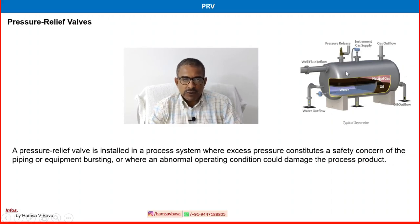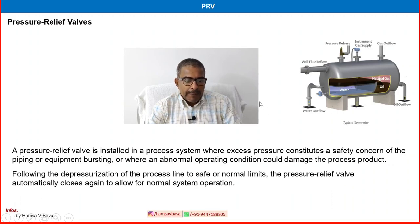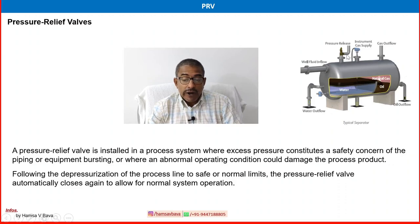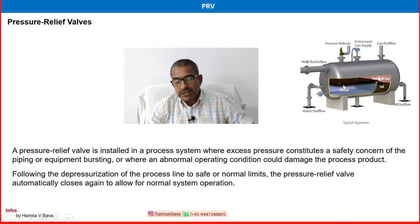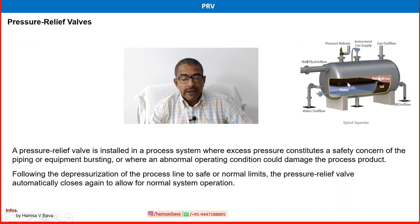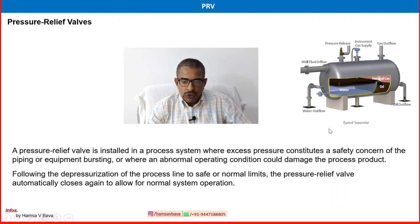This is one application of a PRV installed in a process system — many applications exist. Following depressurization of the process line to a safe or normal limit, the pressure relief valve automatically closes again to allow normal system operation. The spring-loaded valve automatically opens on extra high pressure and once relieved, the spring acts downward to set the valve back to its normal closed position.